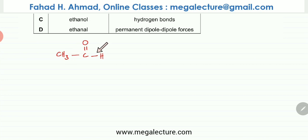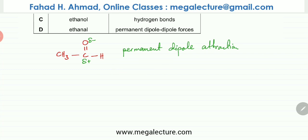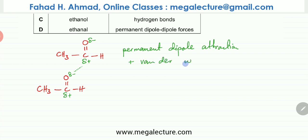The first molecule is ethanal. It has a C=O bond, so this bond is a polar bond. Oxygen has a partial negative charge. The type of interaction that exists in this molecule is permanent dipole attraction — two molecules would be attracted to each other, with the negative side of one molecule attracting the positive side of the other. The other force always present is Van der Waals forces; there would be temporary dipole induced dipole attraction, especially in the non-polar part.